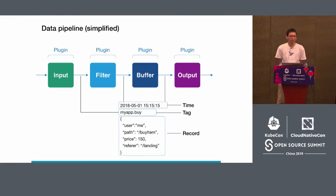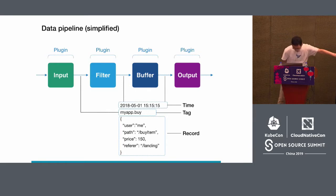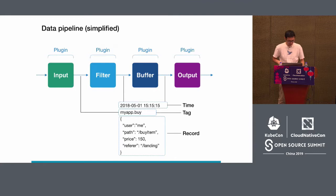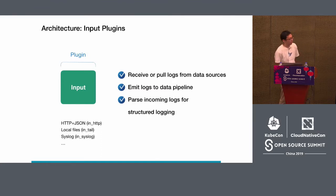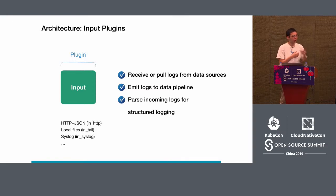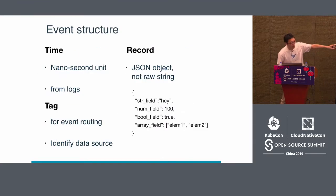This image shows the data pipeline inside a Fluentd instance. Incoming events pass through from left to right: input plugin, filter plugin, buffer plugin, and output plugin. The input plugin is the entry point of the data pipeline. It receives data from HTTP or local files and emits it into the pipeline. The input plugin converts raw string or binary data into Fluentd's structured event format.